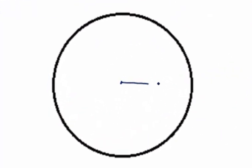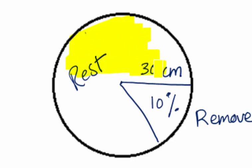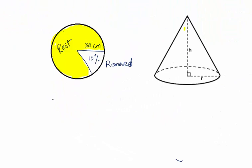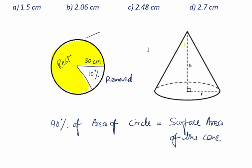The radius of the circle is 30 centimeters. Now 10% of the area is removed, and the rest of the area is used for making a cone. So 90% of the area of the circle must be equal to the lateral surface area of the cone. When we roll this sheet into a cone, the 30 centimeter radius becomes the slant height of the cone.